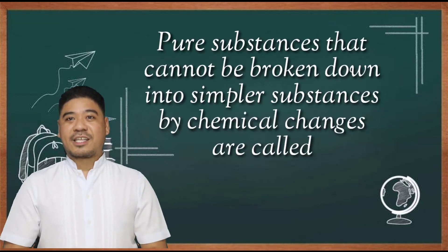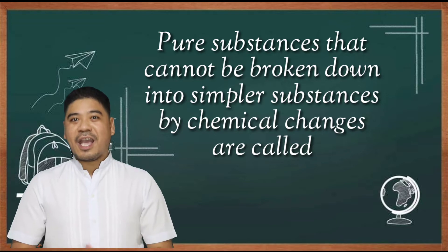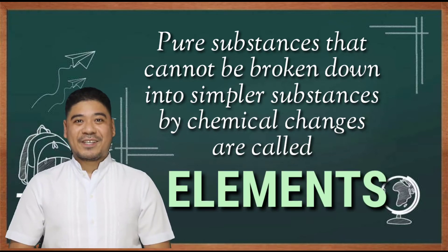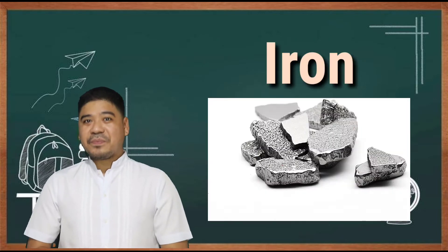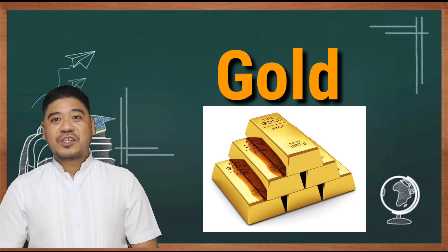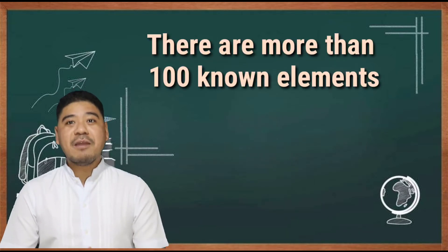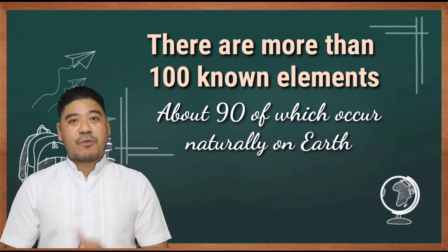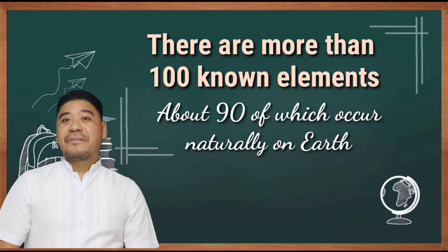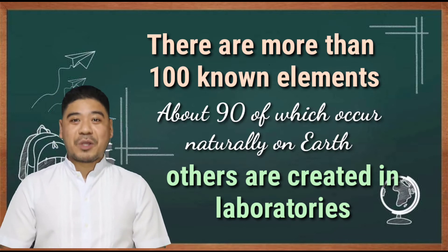Pure substances that cannot be broken down into simpler substances by chemical changes are called elements. Iron, silver, and gold are some examples of the more than 100 known elements, about 90 of which occur naturally on the earth, and two dozen or so have been created in laboratories.